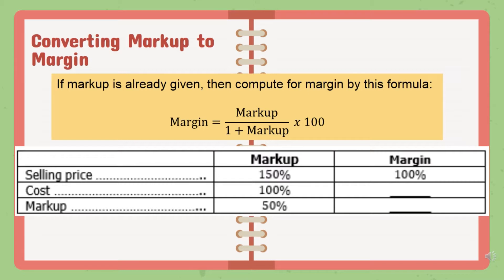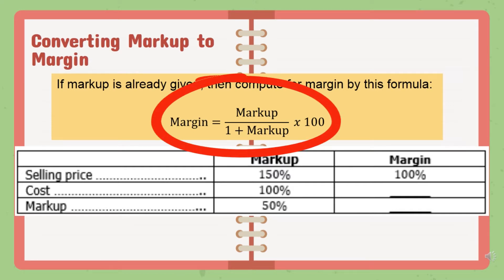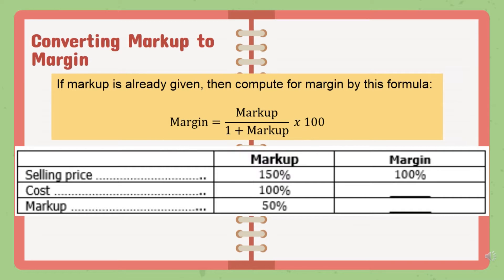This is possible even if the amount of the selling price, cost, or even the markup is not given. In an ambiguous case, we might use a certain formula to do this. For the first case, given the markup, we solve for the margin: margin is equal to markup divided by (1 plus markup), multiplied by 100. Before using this formula, we must convert the markup from percent to decimal form.